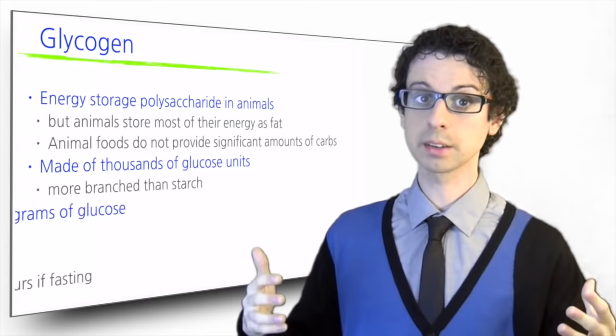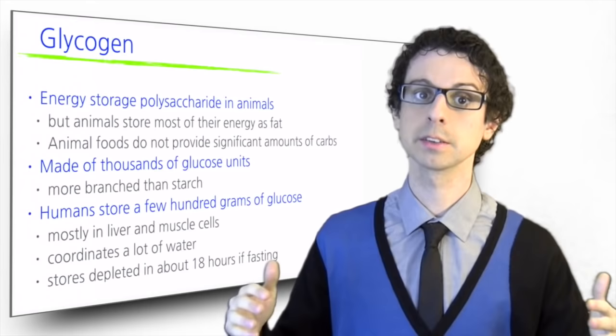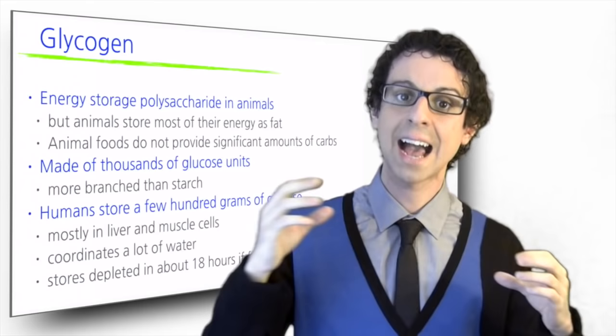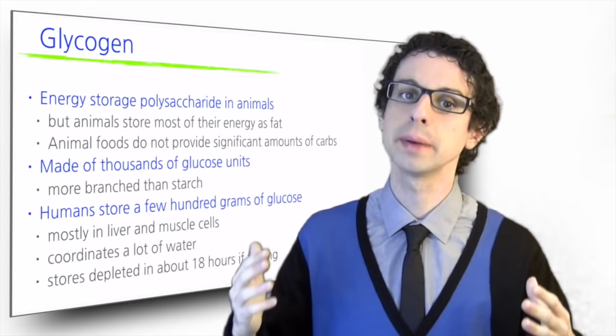We ourselves store glycogen in our liver to have some glucose available in between meals to maintain blood glucose concentration stable. To make glycogen, glucose molecules are combined together. When glucose is needed, glucose molecules will be detached one by one from glycogen.